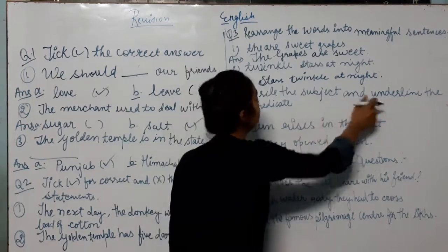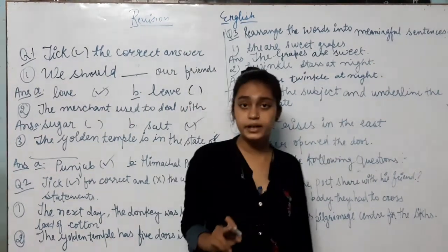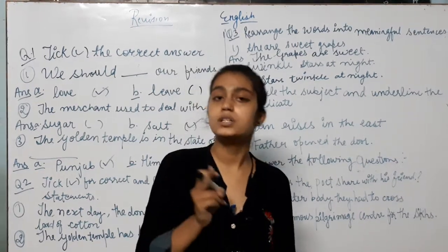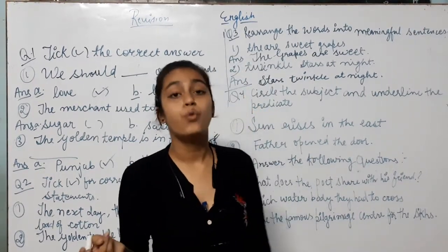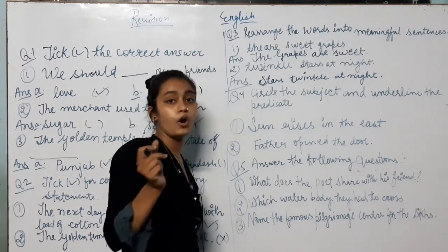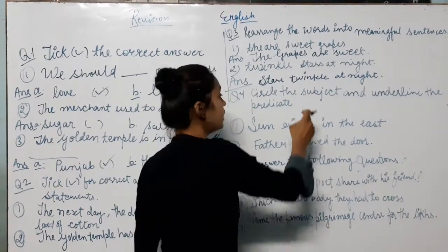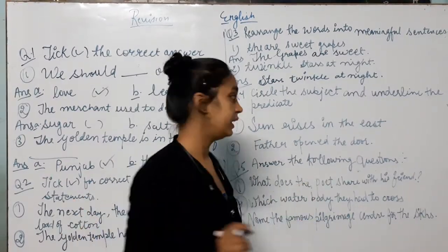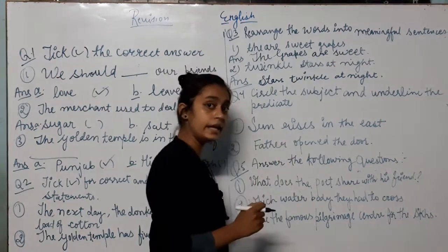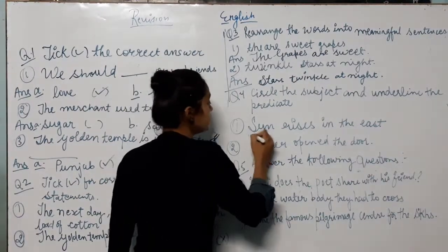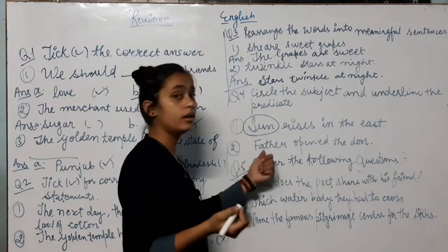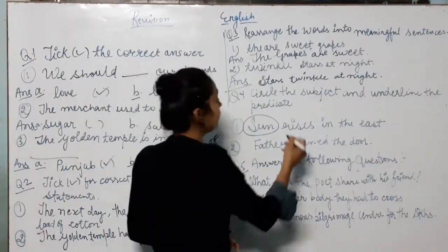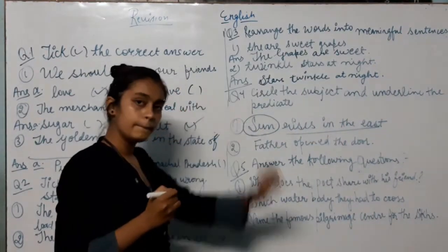Question number four: circle the subject and underline the predicate. You already learnt about this. There are two types of sentences: first one is subject, second is predicate. What the sentence is talking about? What we are talking about? That is called subject. And what we are talking about subject—that is predicate. So first one is sun rises in the east. Sun is the subject. We are talking about sun. But what is talking about sun? That it is rise in the east. So it is a predicate.